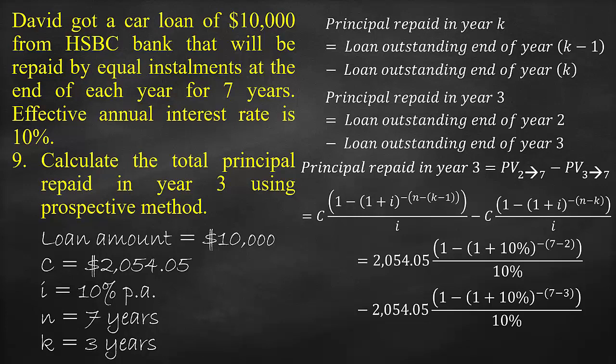Minus the loan outstanding at the end of Year 3, which is: $2,054.05 multiplied by (1 minus (1 plus 10%) to the power of negative (7 minus 3), all divided by 10%). This represents the present value of the remaining instalments as of Year 3, covering 4 unpaid periods.